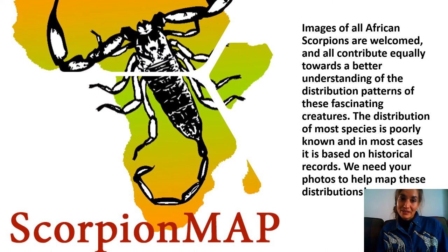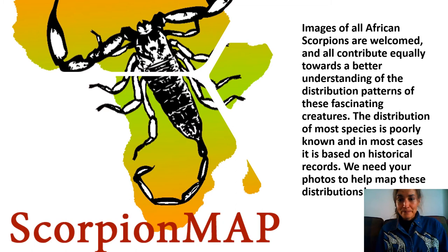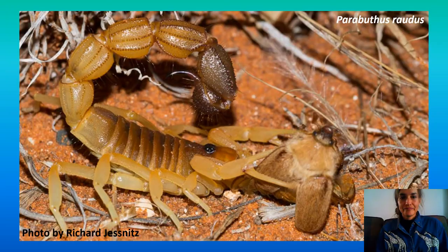Then there's Scorpion Map — we're also mapping Africa's awesome scorpions. Images of all African scorpions are welcomed and they all contribute equally to better our understanding of the distribution patterns of these fascinating animals. The distribution of most scorpions out there is not fully understood, and therefore Scorpion Map is really helping us to understand where these species occur and how best we can work to conserve them. Here's a great example of Paributhus rhodus with a prey item that looks like some sort of beetle, captured by Richard Jesnitz from the Northern Cape in South Africa.